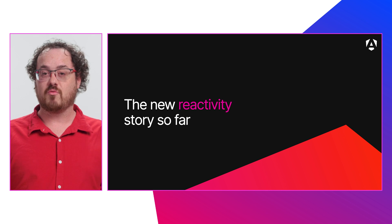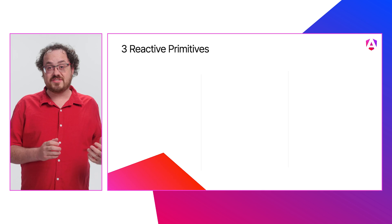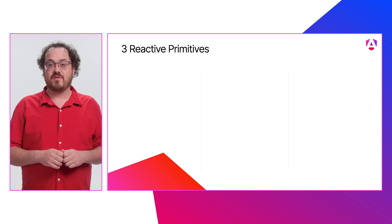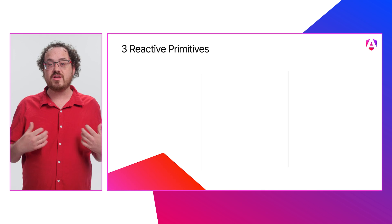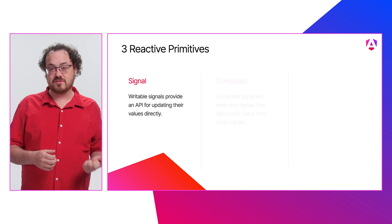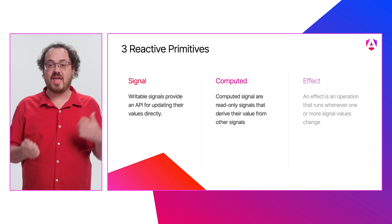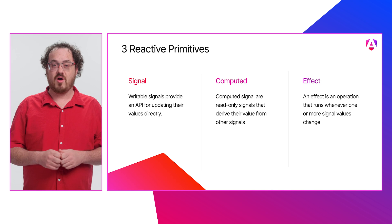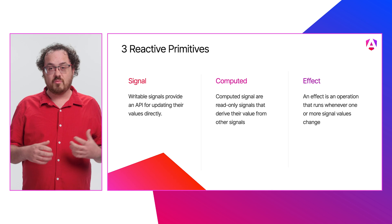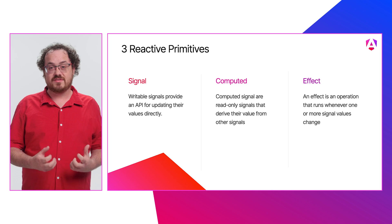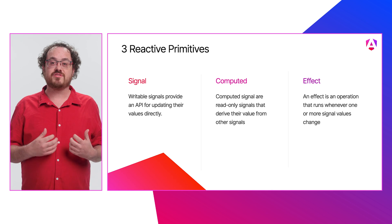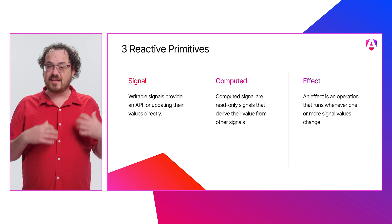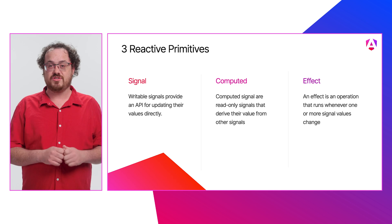Last year in v16, we introduced Angular developers to our three new reactive primitives: signal, computed, and effect. These APIs are at the heart of our new reactivity model. With them, developers can have confidence that Angular will understand changes made to their application state and update the UI correctly and efficiently.